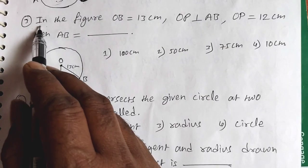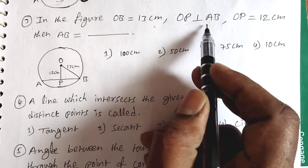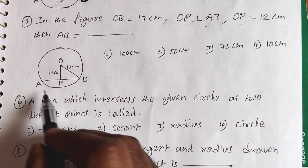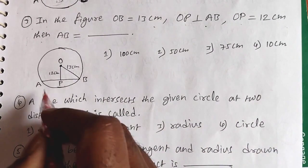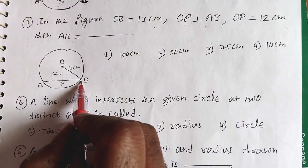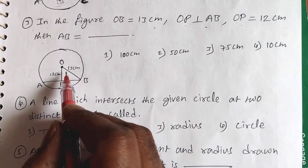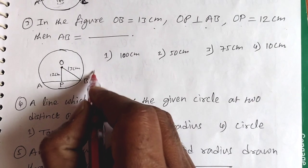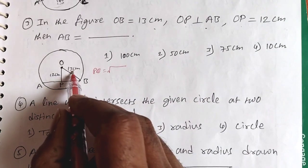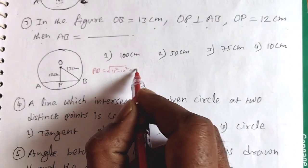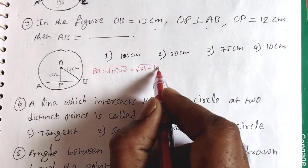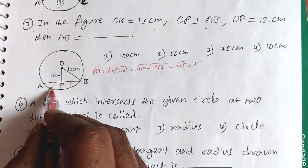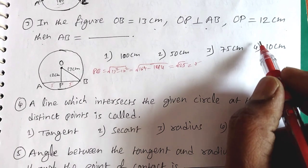Question 3: In the figure, OB is equal to 13 cm, OP is perpendicular to AB, and OP is equal to 12 cm. Then AB is equal to how much? OP is perpendicular to AB, so OB is 13 cm and OP is 12 cm. PB equals the square root of OB squared minus OP squared, which equals the square root of 169 minus 144, which equals the square root of 25, which is 5. So 5 plus 5 is 10. The fourth option is the answer.